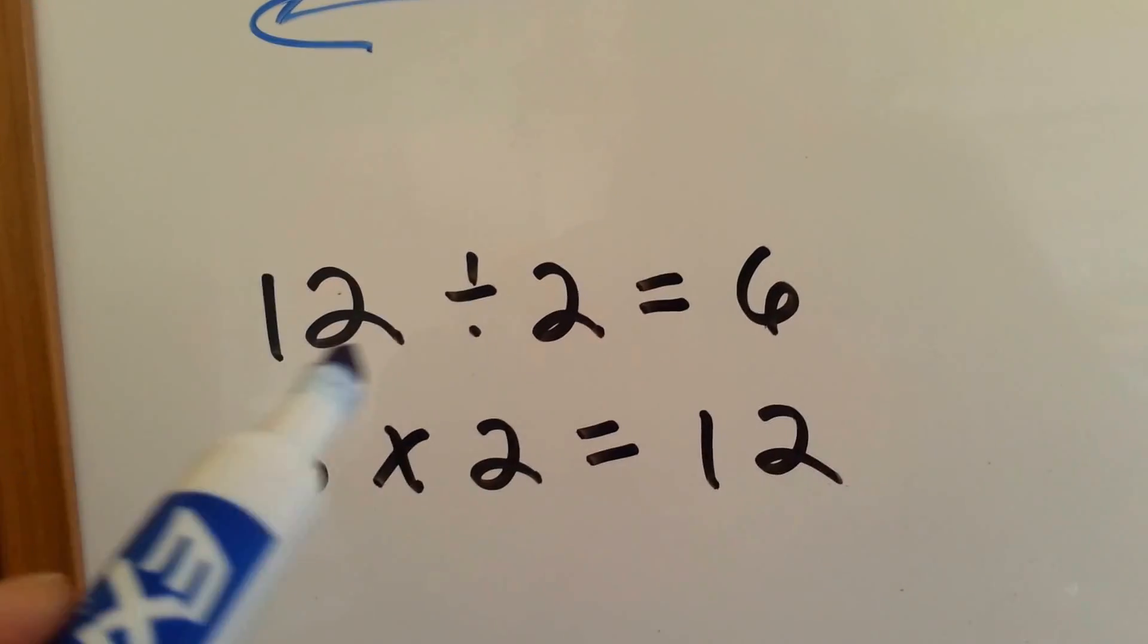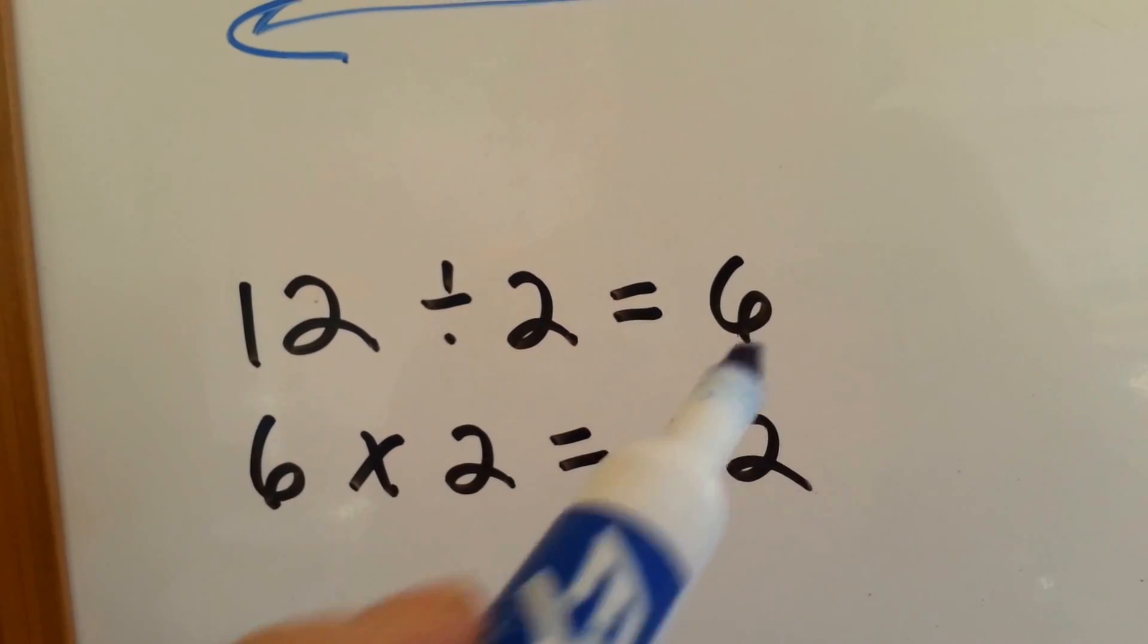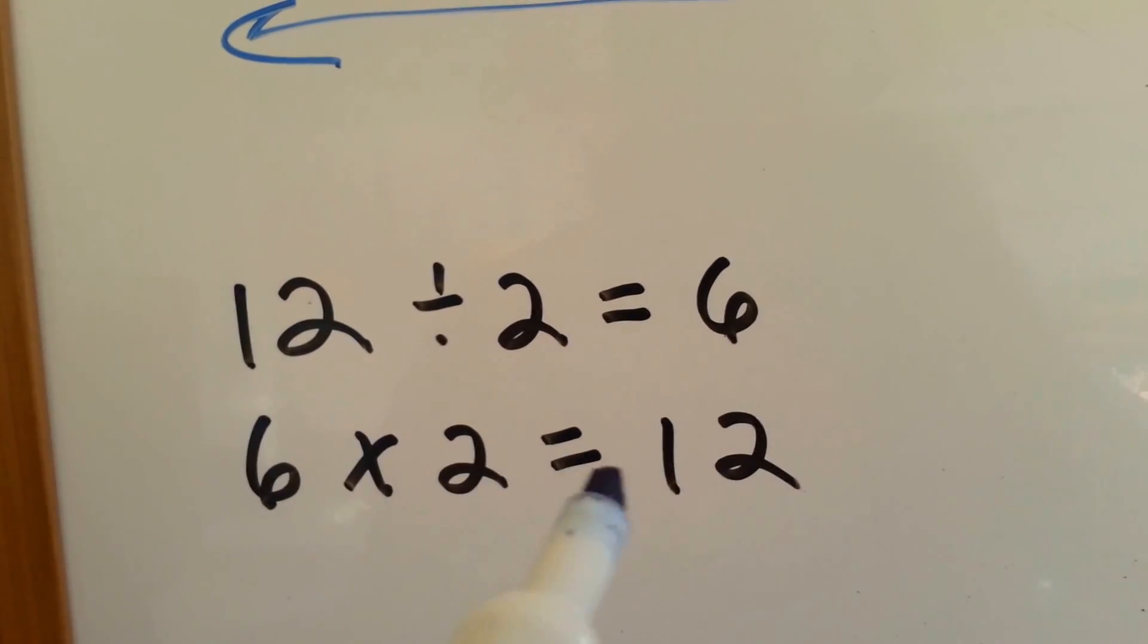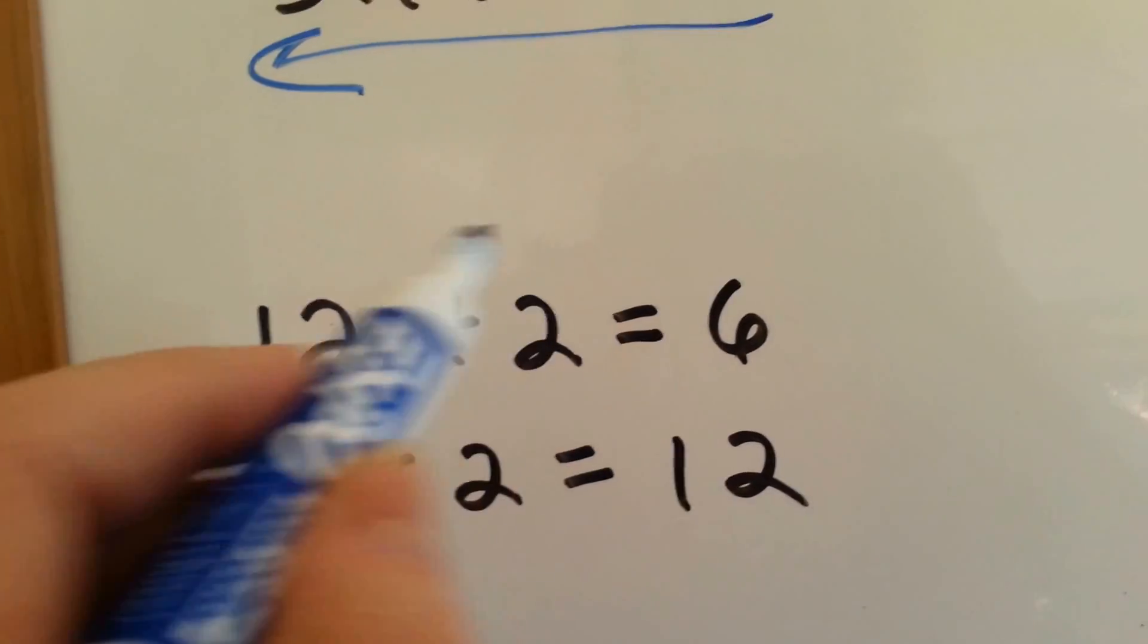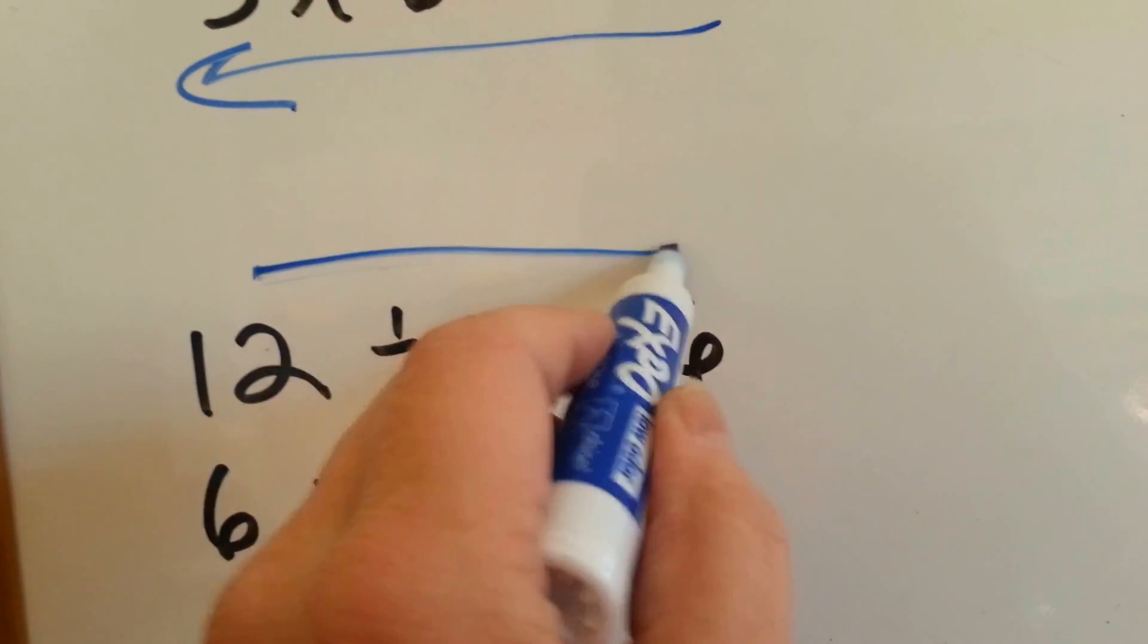Look at this one. 12 divided by 2 equals 6. 6 times 2 equals 12. Again, it's the inverse operation.